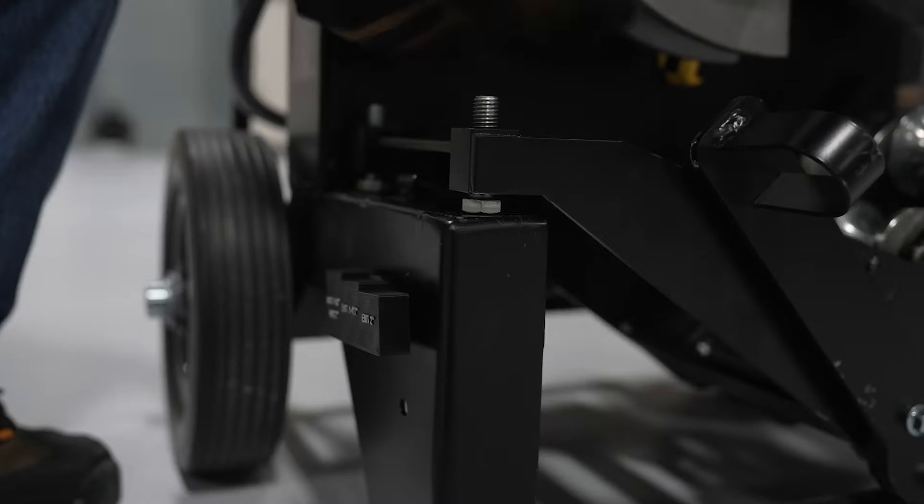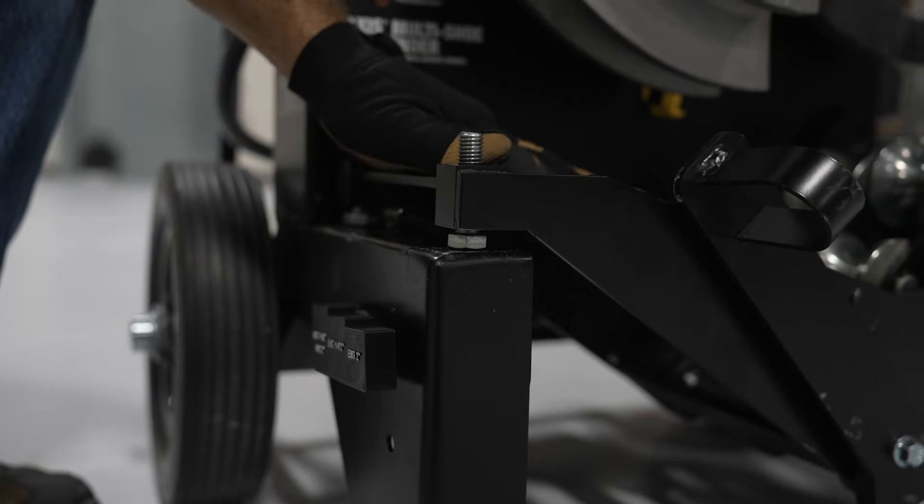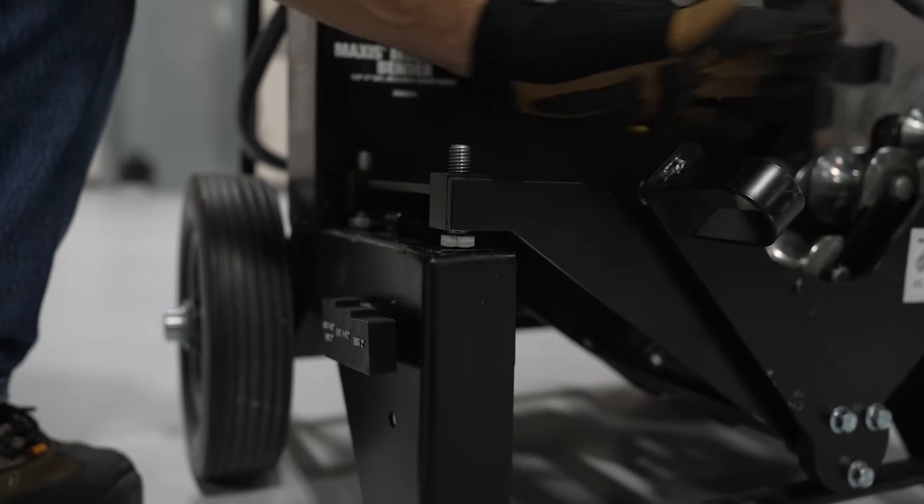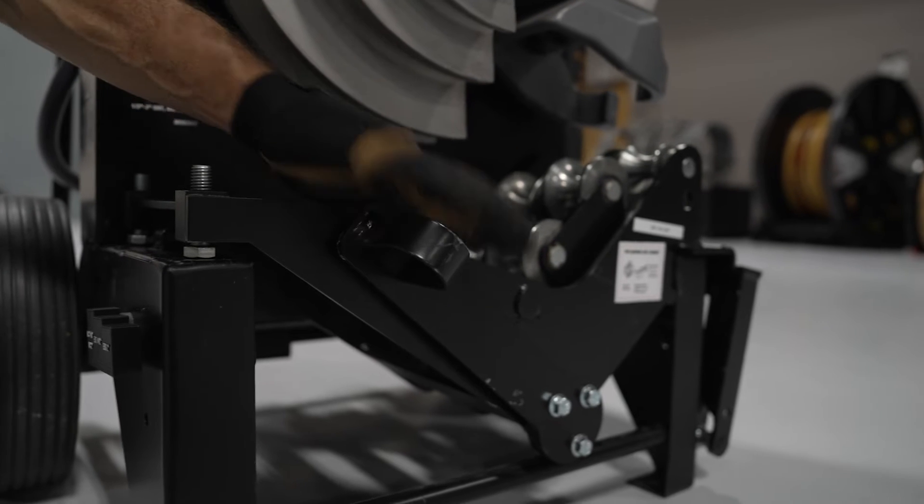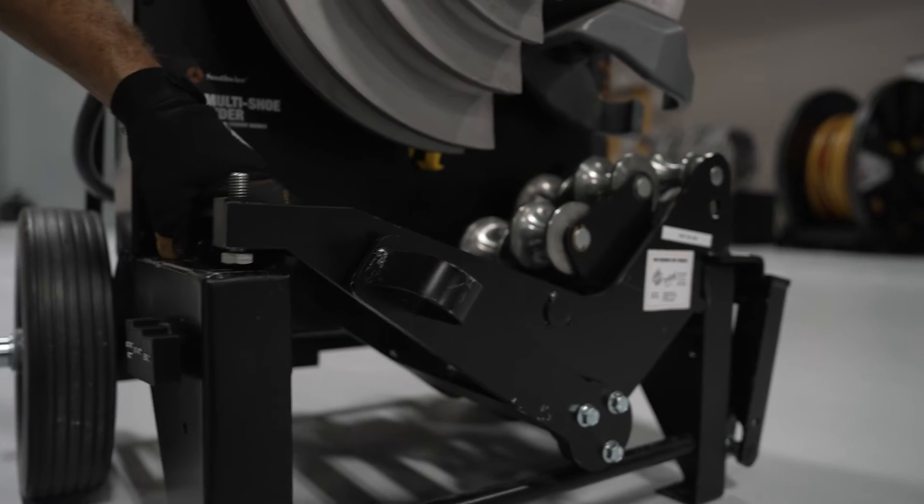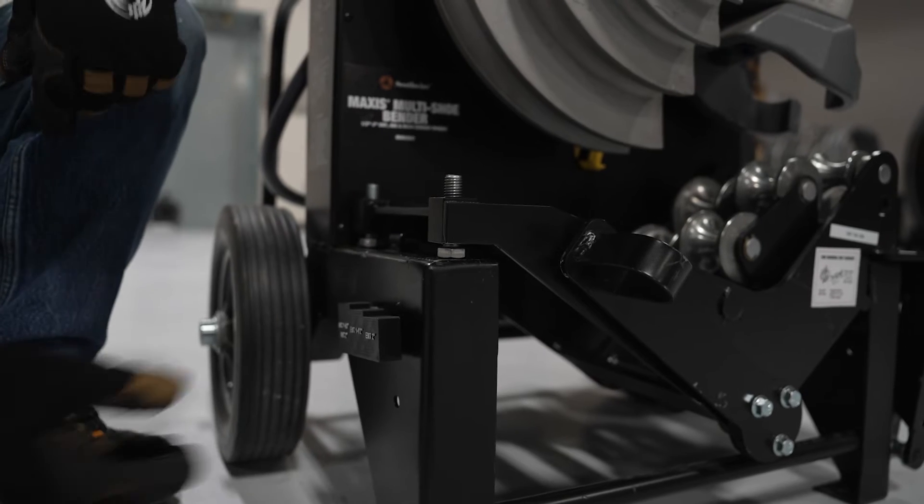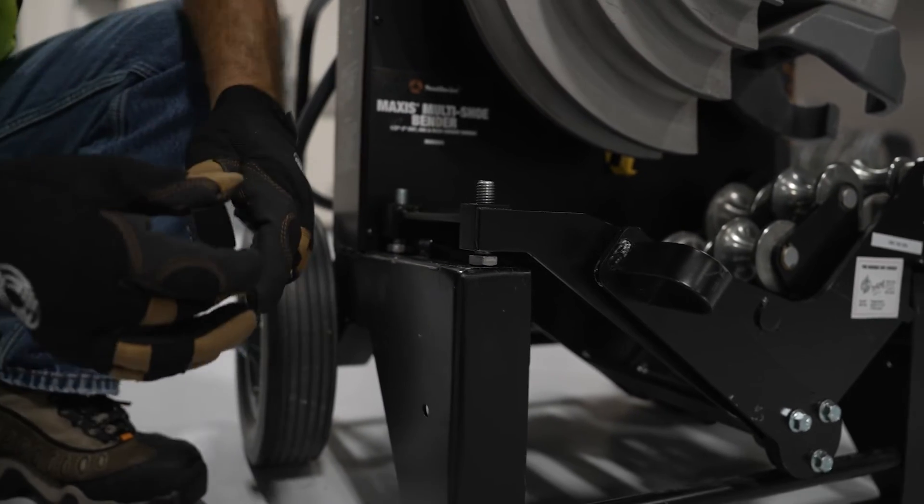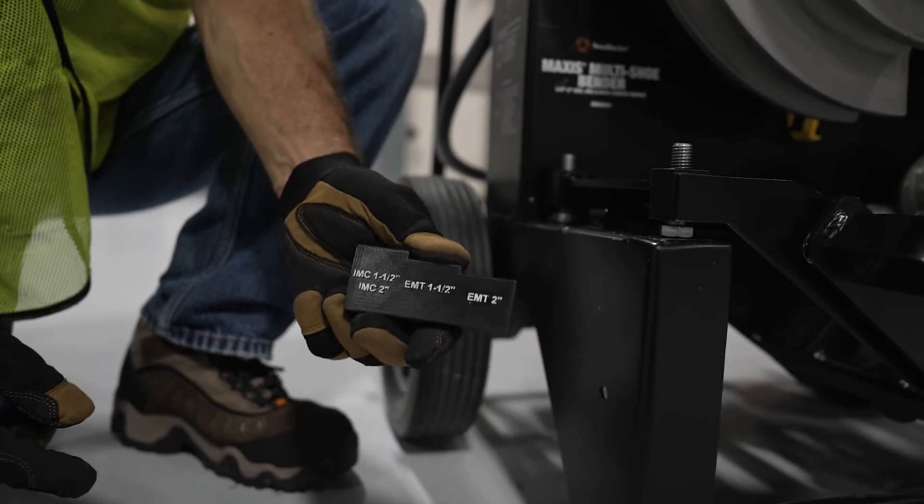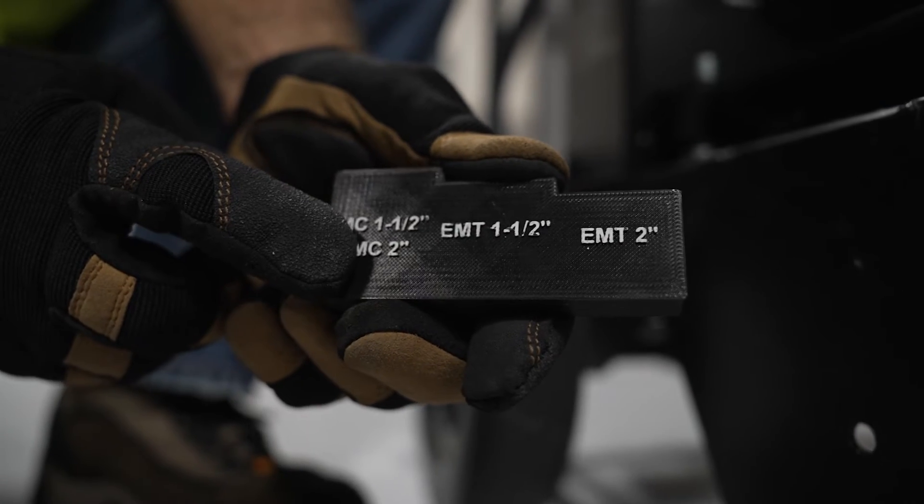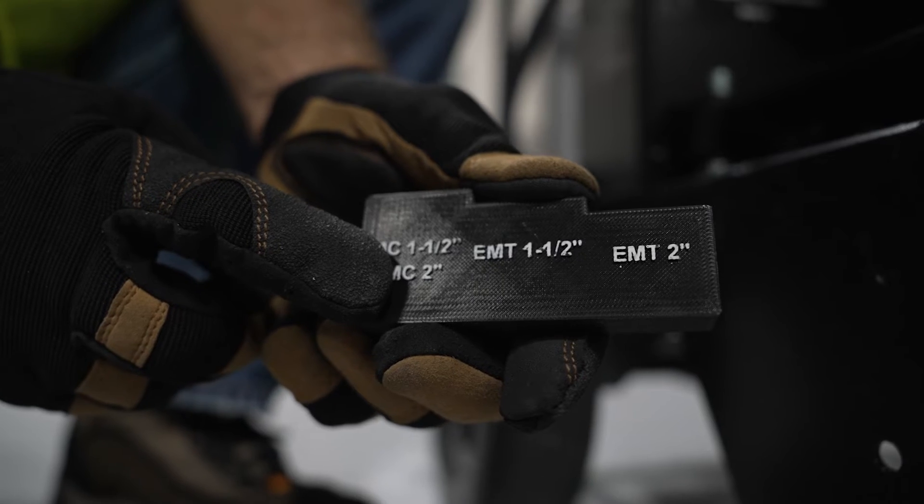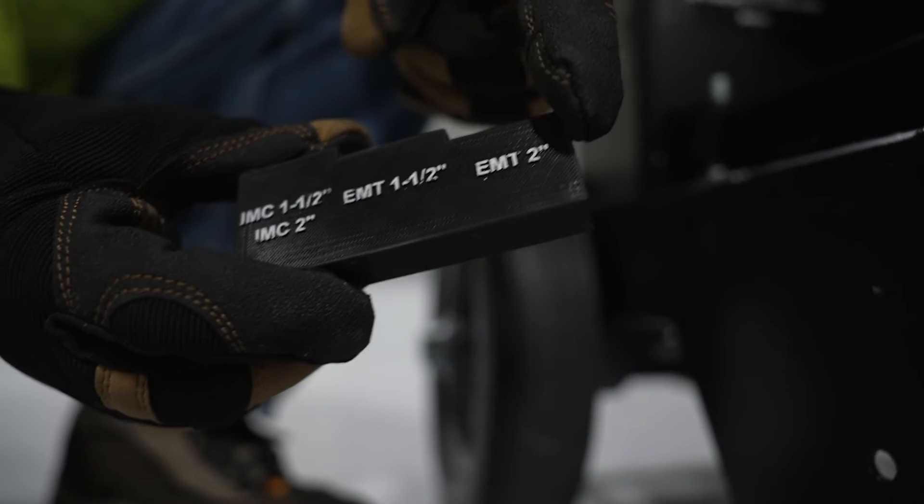Now if you are bending inch and a half or two-inch EMT conduit, you'll be using the pressure pedal, and now is a good time to preset the height of the pressure rollers. Your MSB2000 was shipped from the factory with an innovative pressure roller gauge tool only available from Southwire. We've provided this tool to reduce the guesswork when it comes to adjusting the pressure roller height.